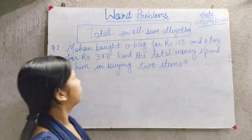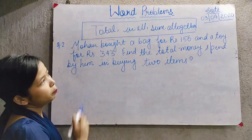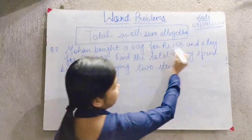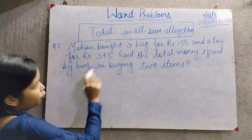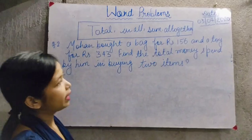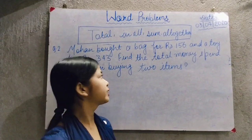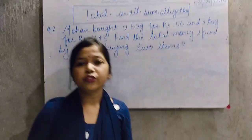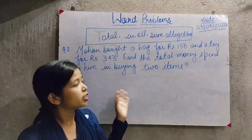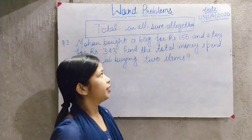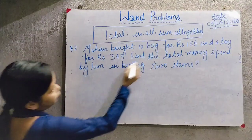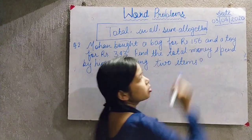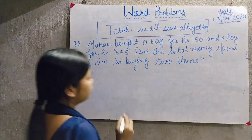Let's take one more example. The question is: Mohan bought a bag for rupees 156 and a toy for rupees 343. Find the total money spent by him in buying the two items. We will look at the information provided: the cost of the bag and the cost of the toy.